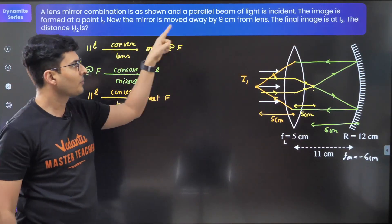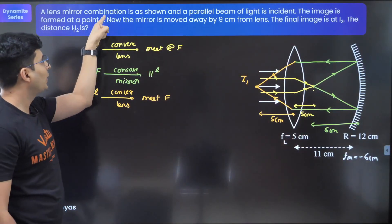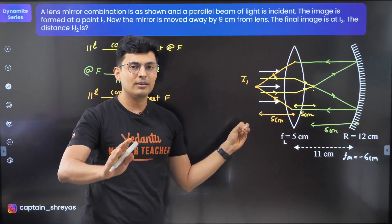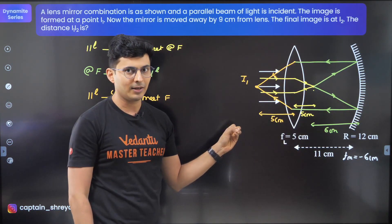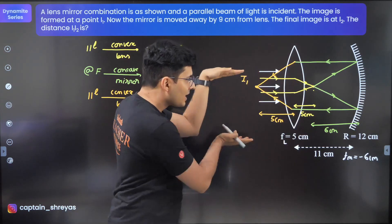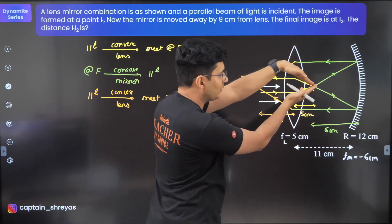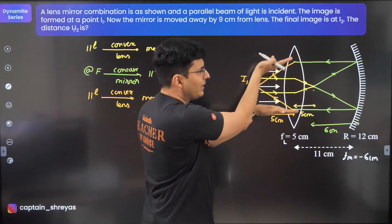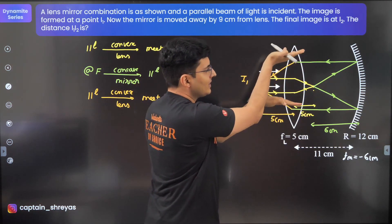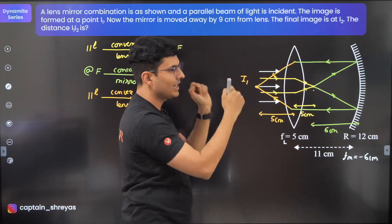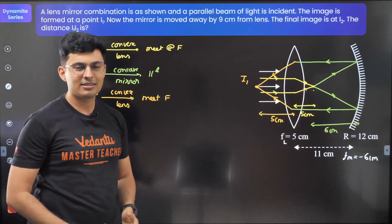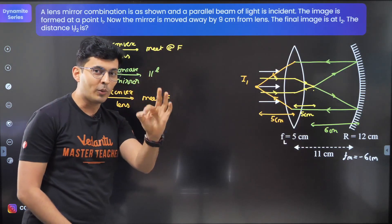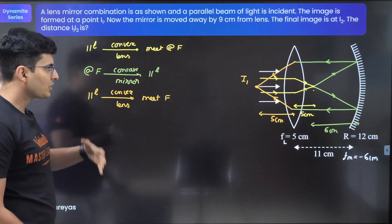According to the question, the image is formed at point I1 after all these events. There cannot be any further reflection or refraction. The first event was refraction, parallel beam meets at the focus. The rays continue from the focus, they become parallel after reflection, and because it's a parallel beam again, it meets at I1.